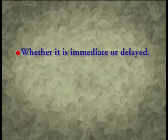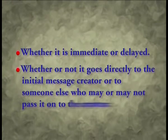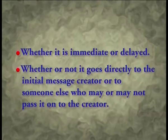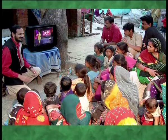The third major difference between mass communication and other forms relates to feedback. One dimension is whether feedback is immediate or delayed. The second is whether it goes directly to the initial message creator or to someone else who may or may not pass it on. In other forms of communication, feedback from the people receiving the message goes directly to the individual who created it. In mass communication, feedback from all receivers is almost impossible because of the number of receivers involved.